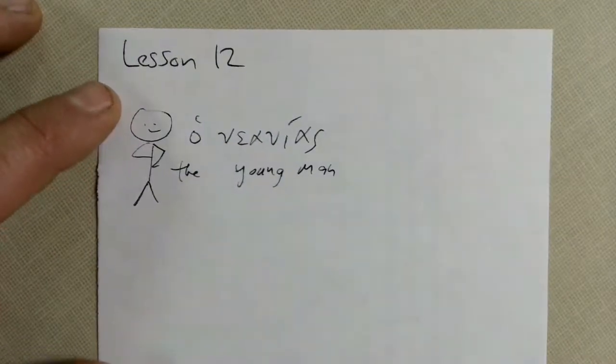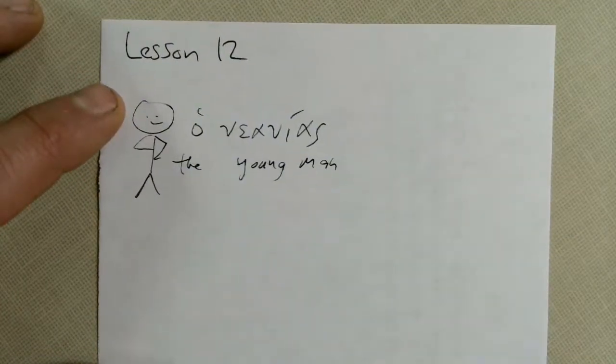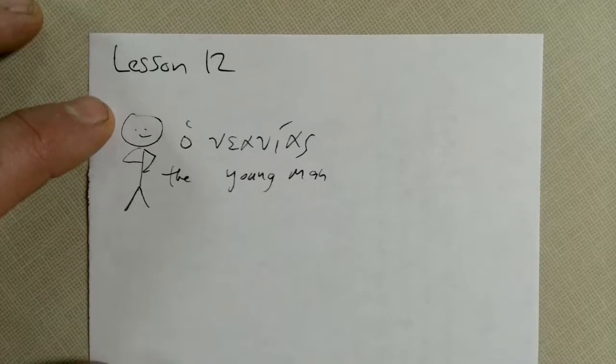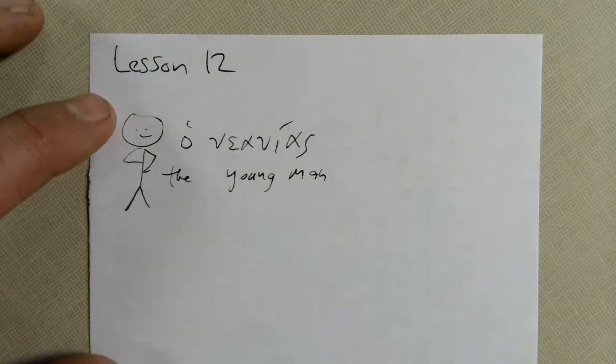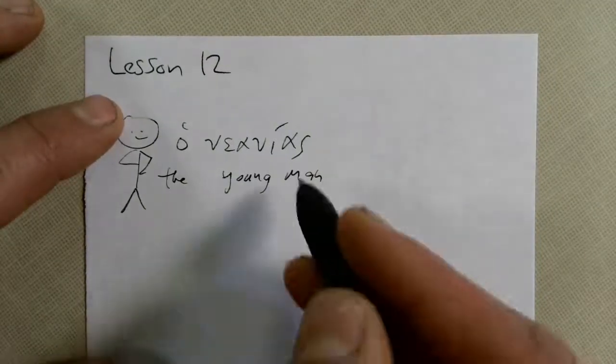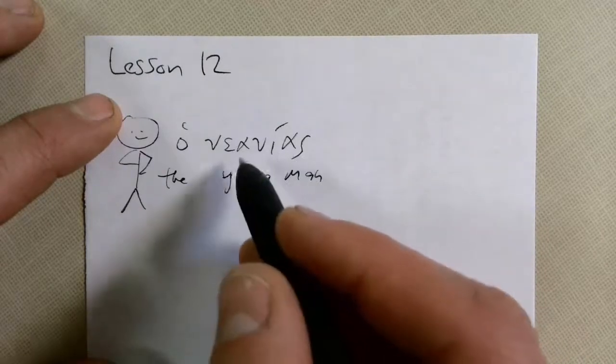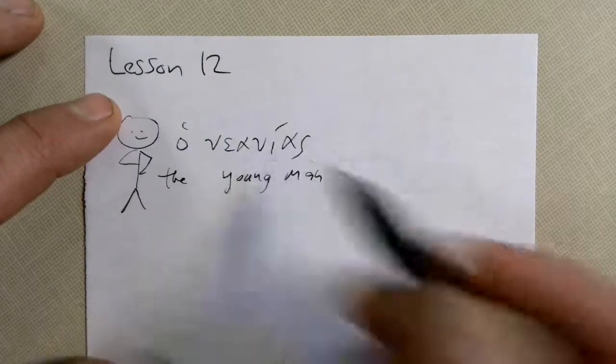Now Nanias is slightly different, only slightly different than what we have learned about Ikea so far. You'll notice instead of just a regular old A, it's Nanias. There's an AS there.